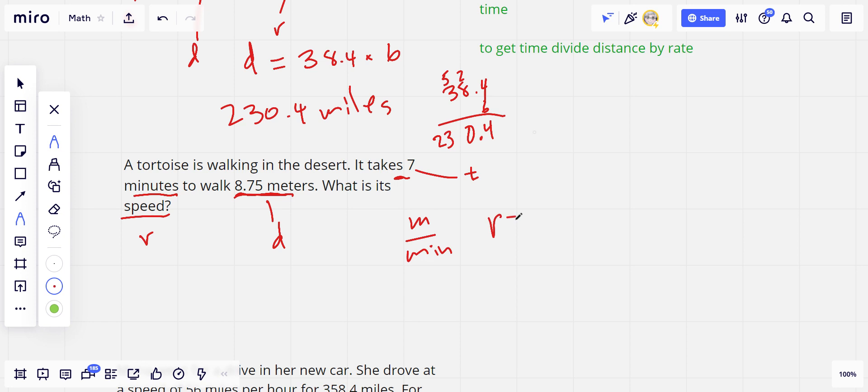So our rate equals 8.75 meters divided by 7 minutes. So let's do that division, 8.75 divided by 7. There's 1 seven in 8, and leaves 1. How many 7s in 17? Well, 2, I think.